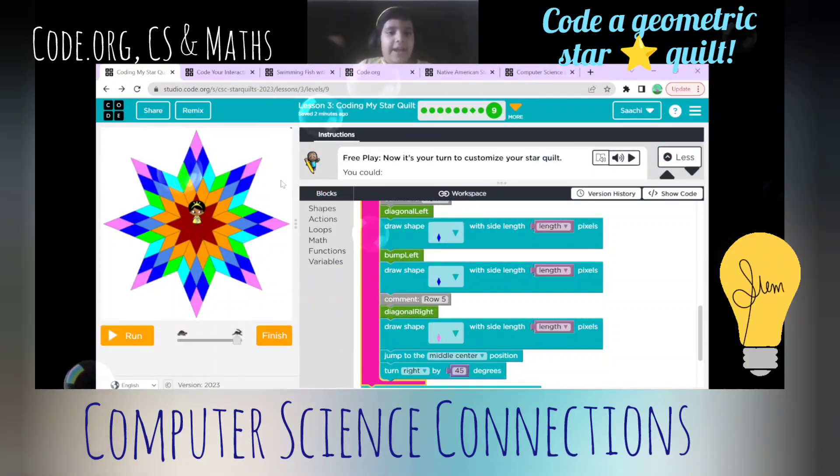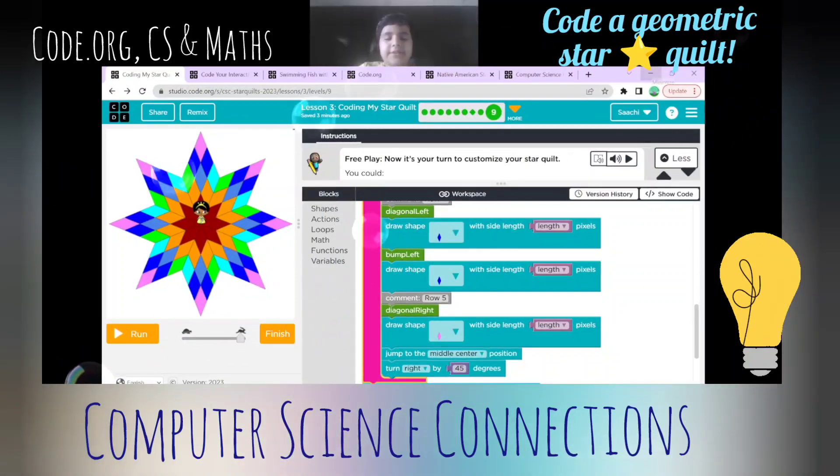So every place on the running area has a unique address, like 10, 10, 99, 10, 9, like that. So this is how you can create a beautiful little star quilt like this. And this is the connection between computer science and math.